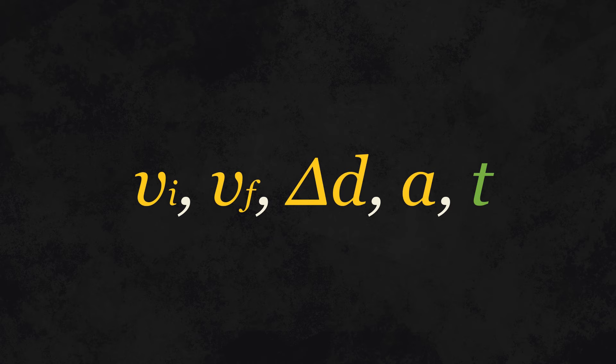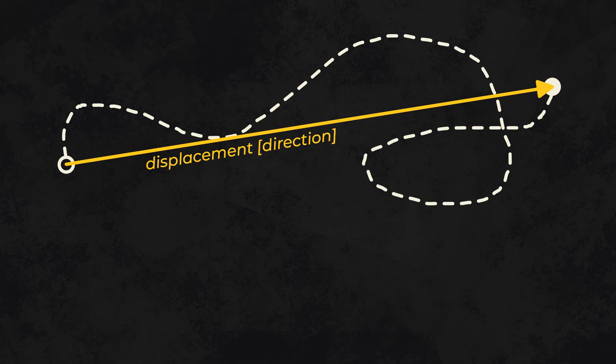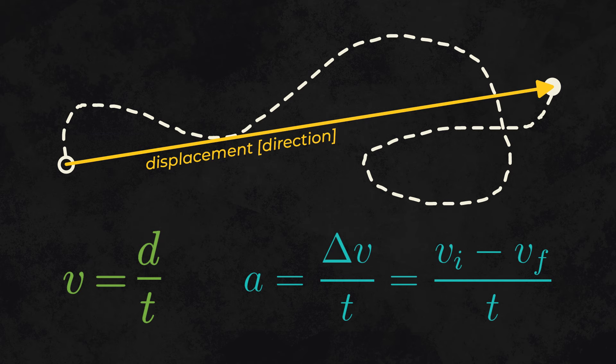Finally, we'll define these five variables. Displacement is your distance and direction. Velocity is equal to displacement over time. Finally, acceleration is equal to the change in velocity over time.